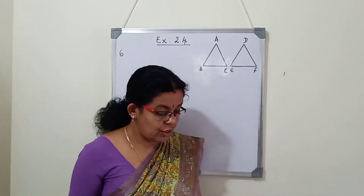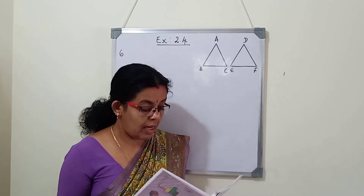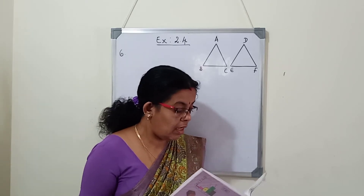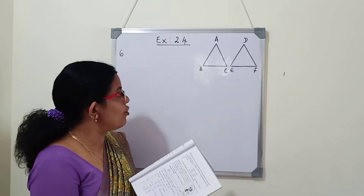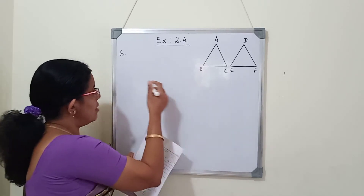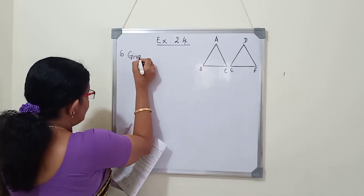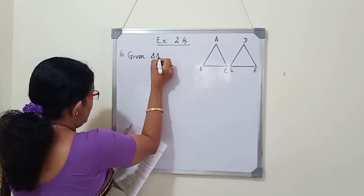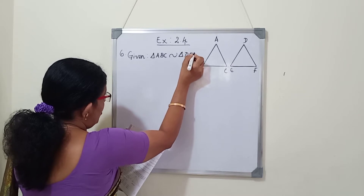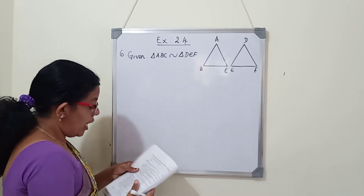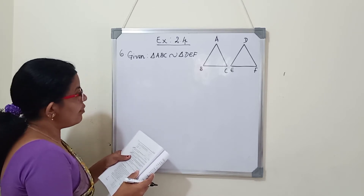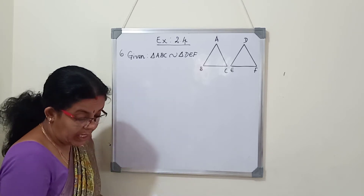Prove that the ratio of the areas of two similar triangles is equal to the square of the ratio of their corresponding medians. So we will write: given triangle ABC is similar to triangle DEF. We have to prove that the ratio of the areas of two similar triangles is equal to the square of the ratio of their corresponding medians.